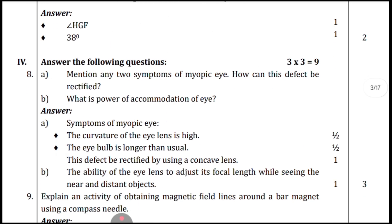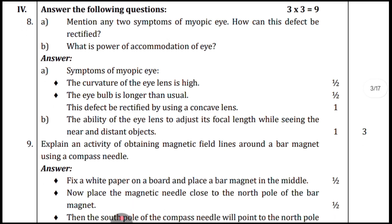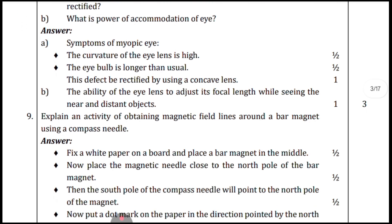Coming to the four-mark answer section: mention any two symptoms of myopia. Also, how can this defect be rectified (corrected or cured)? Part B: what is the power of accommodation of the eye? The answers are given here in systematic manner.